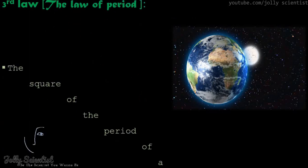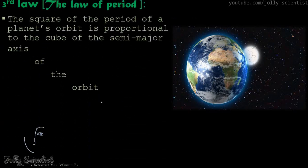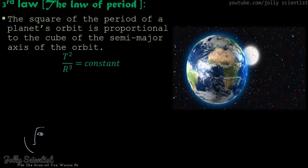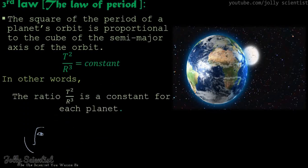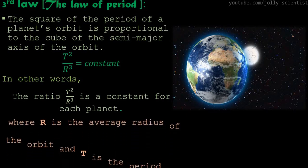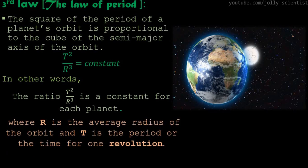The third law — the law of periods: The square of the period of a planet's orbit is proportional to the cube of the semi-major axis of the orbit. Mathematically, T² divided by R³ is a constant for each planet, where R is the average radius of the orbit and T is the period or time of one revolution.